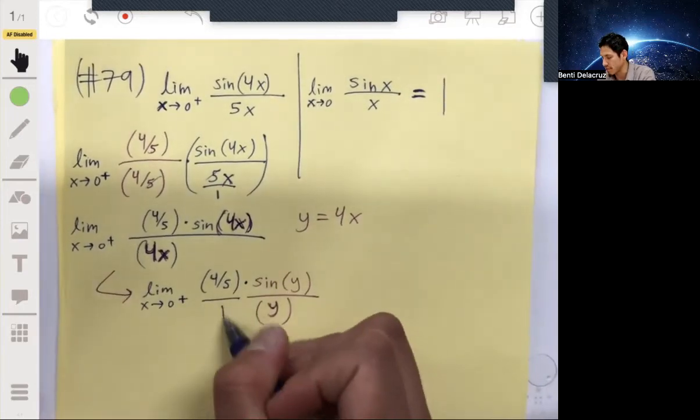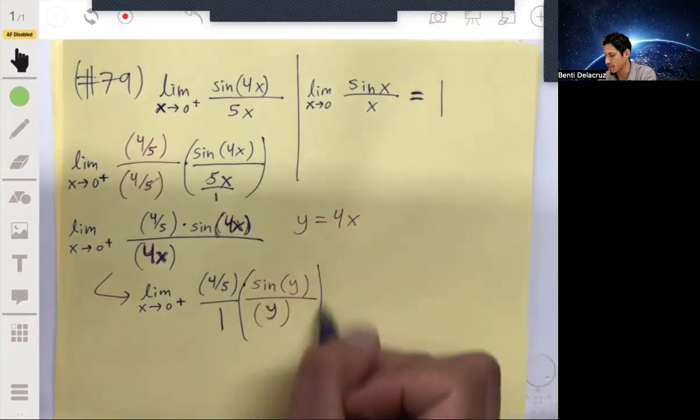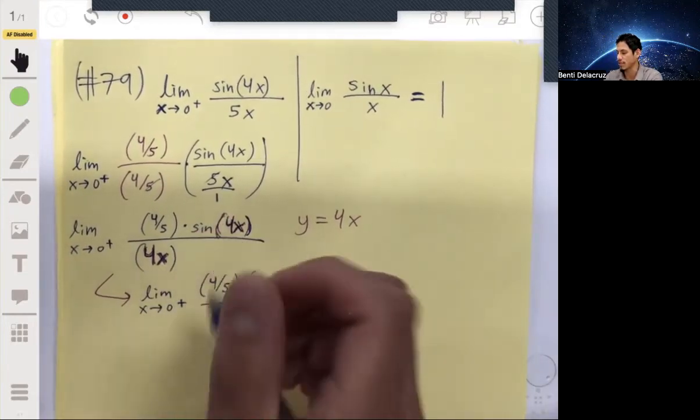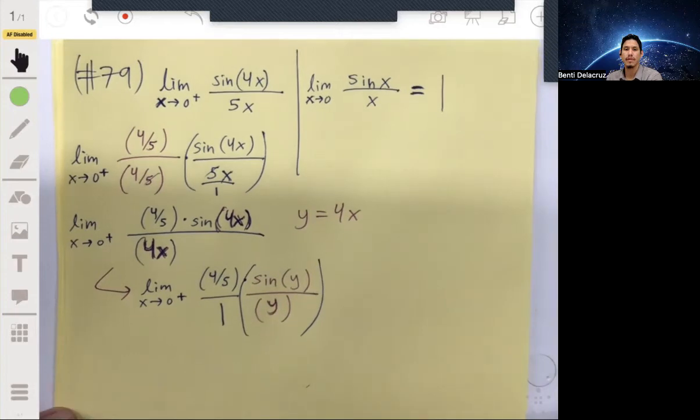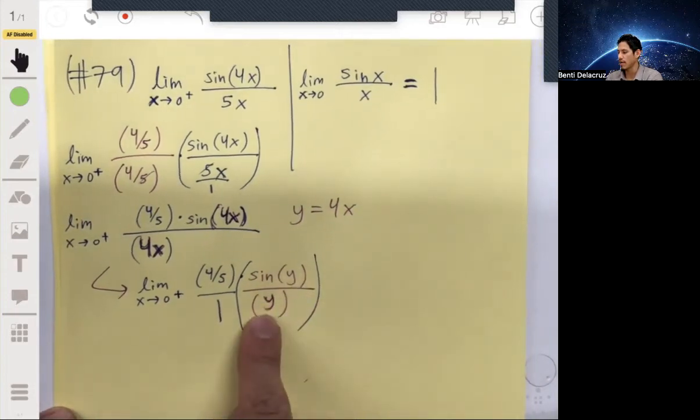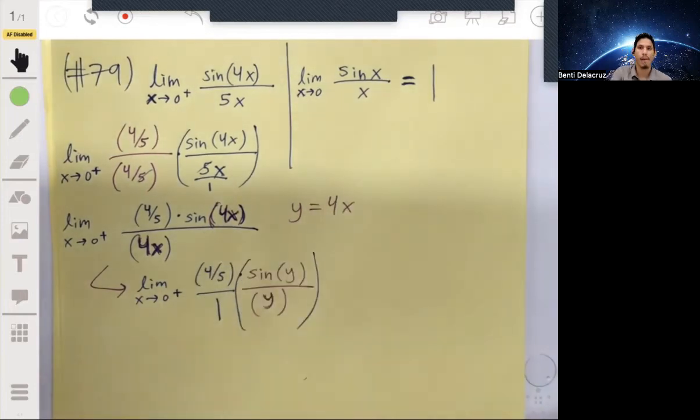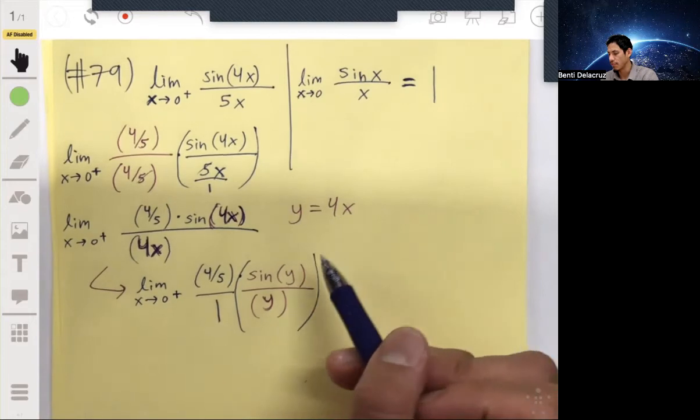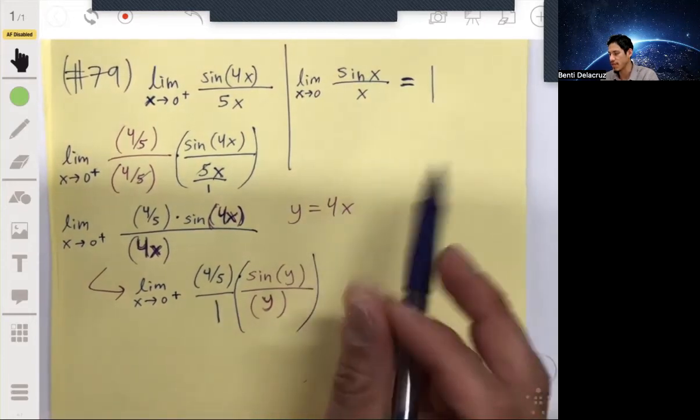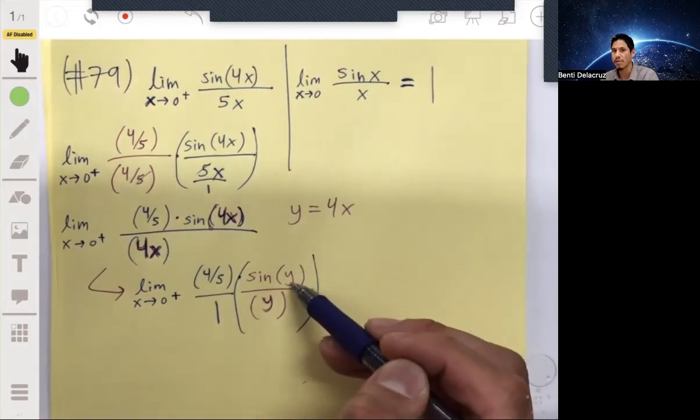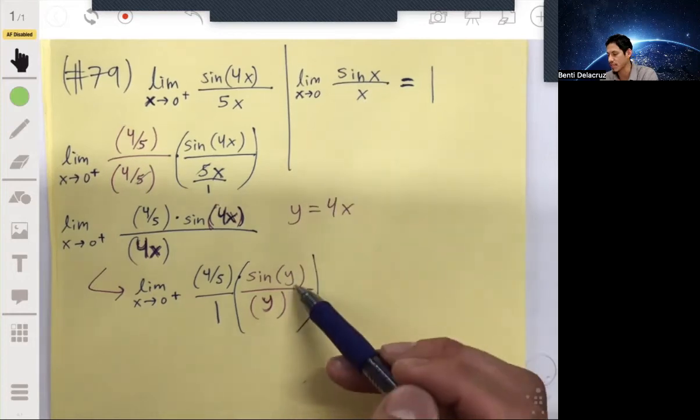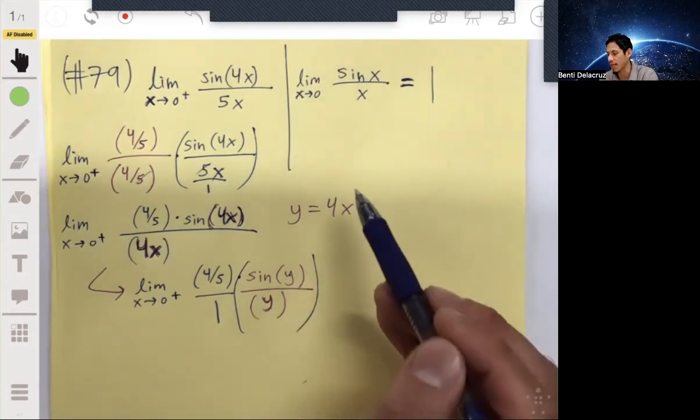So then you have sin(y) over y. This is essentially the same thing as this up here. The only difference is that instead of using x we're using y, but it doesn't actually matter if we use x, y, or z as long as the variables here and here match.